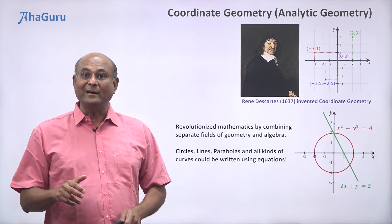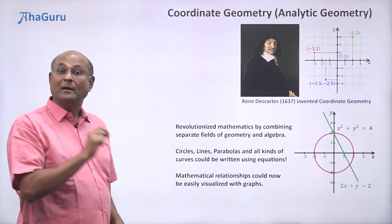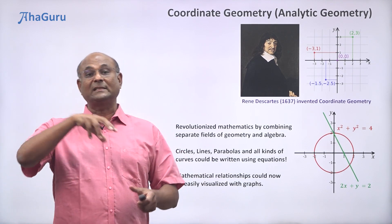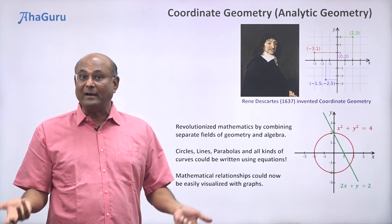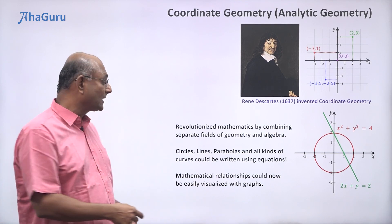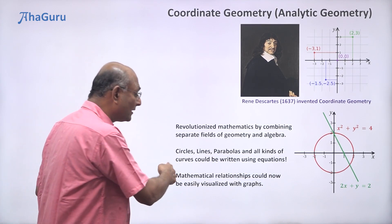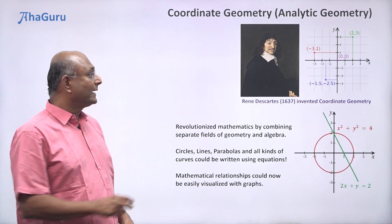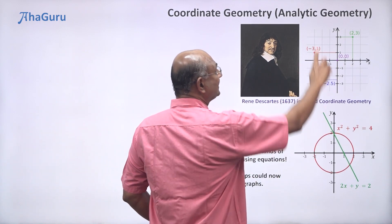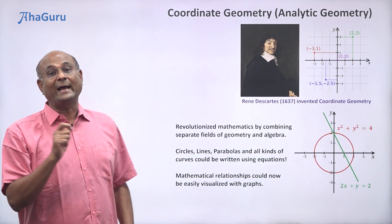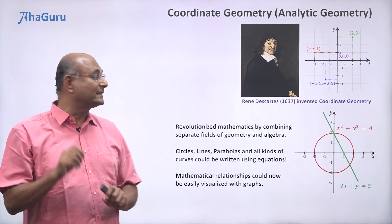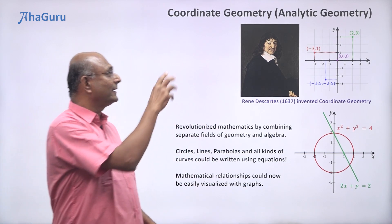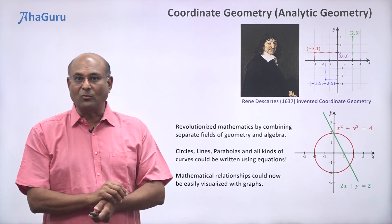A revolutionary idea. In fact, if y and x are two variables and y changes when x changes — that's a mathematical relationship — you can visualize how y changes with x using a graph. So this is a very, very powerful tool. That's why we call this xy axis system the Cartesian coordinate system, because Descartes came up with it. In his honor, we call it the Cartesian coordinate system.